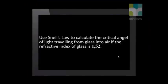It is probably best to see how this works in an example. Use Snell's law to calculate the critical angle of light traveling from glass into air if the refractive index of glass is 1.52. As always, let us list our variables.